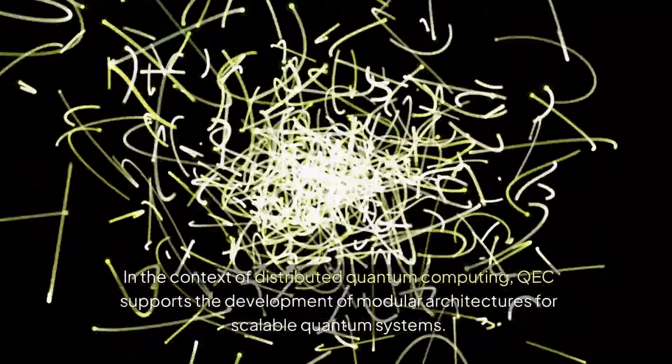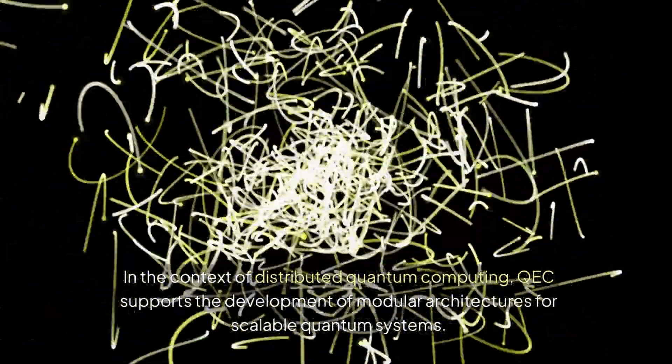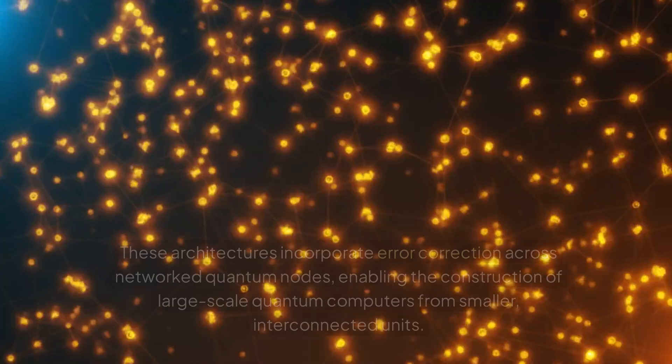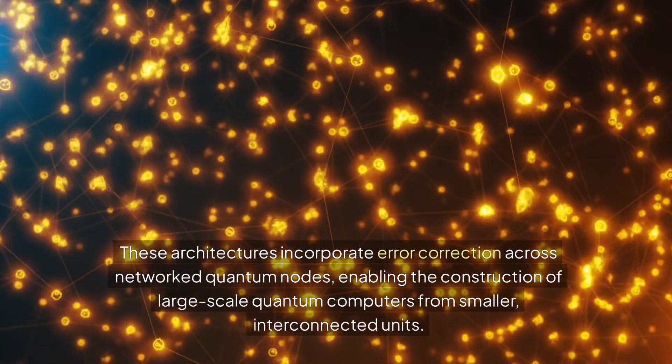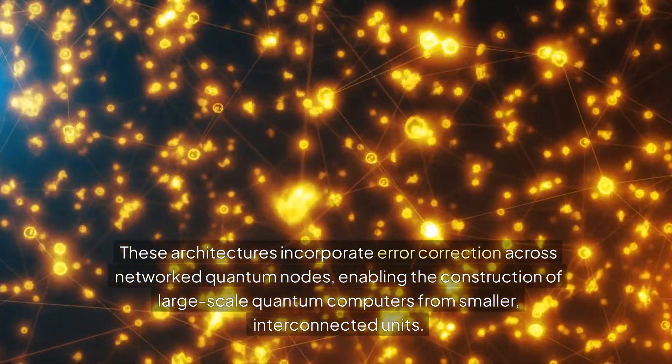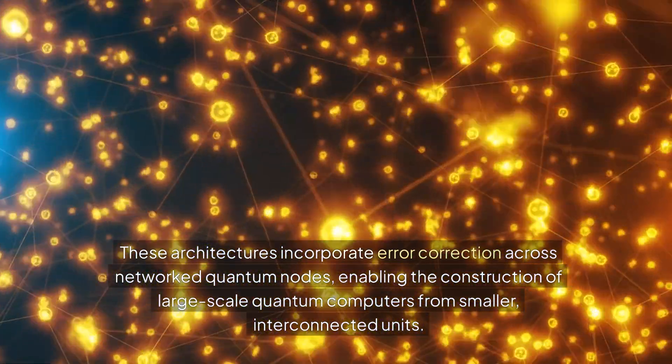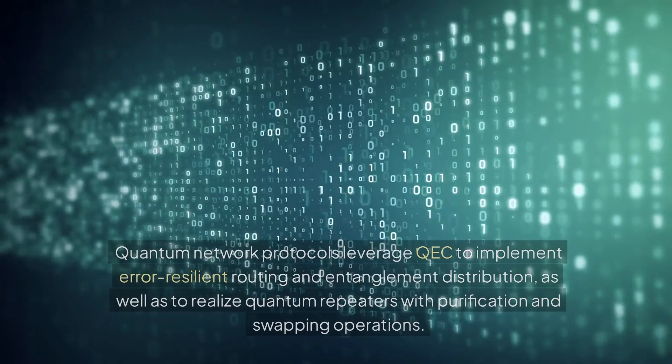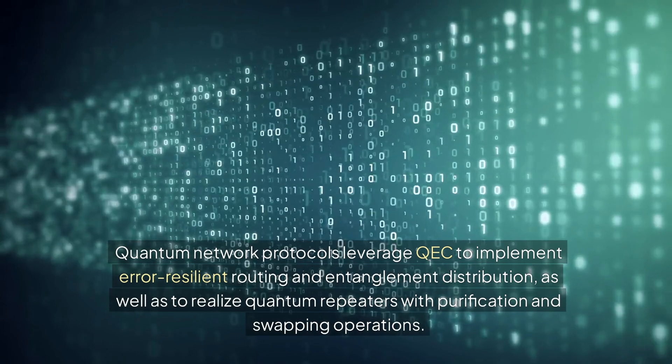In the context of distributed quantum computing, QEC supports the development of modular architectures for scalable quantum systems. These architectures incorporate error correction across networked quantum nodes, enabling the construction of large-scale quantum computers from smaller, interconnected units. Quantum network protocols leverage QEC to implement error-resilient routing and entanglement distribution, as well as to realize quantum repeaters with purification and swapping operations.